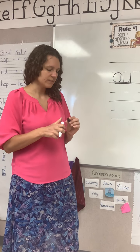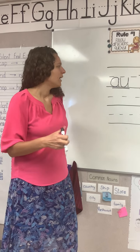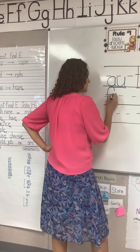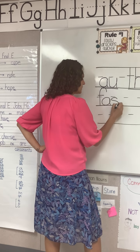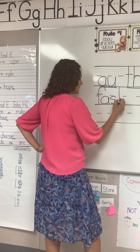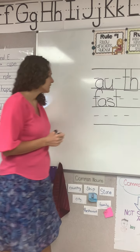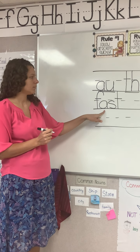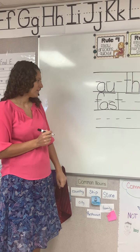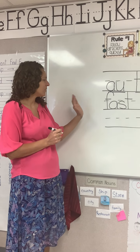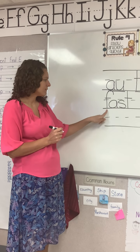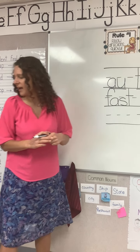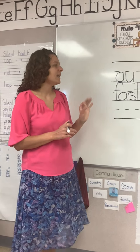All right, class, what do I need to write to spell 'uncle'? Am I finished? No — we can never have a syllable without a vowel. We need to add our silent final E, job four. Make sure yours looks like mine, and then we can mark it. Does this need a marking? Good — we need to double underline our silent final E, job four.